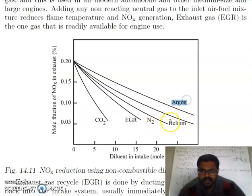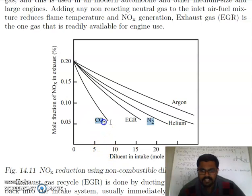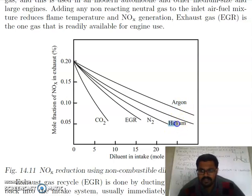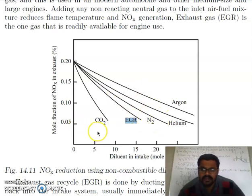We can mix argon, helium, or nitrogen with the inlet air-fuel mixture; we can also mix exhaust gas or CO2. CO2 has the highest specific heat, so fewer moles are needed to dilute the mixture compared to argon, which has a lower specific heat and thus requires a greater amount to maintain a low engine temperature. However, neither argon, helium, CO2, nor other gases are available in isolated form. So we use the exhaust gas from the previous cycle, mixing it into the new cycle to dilute the air-fuel mixture and decrease the overall working temperature of the engine.